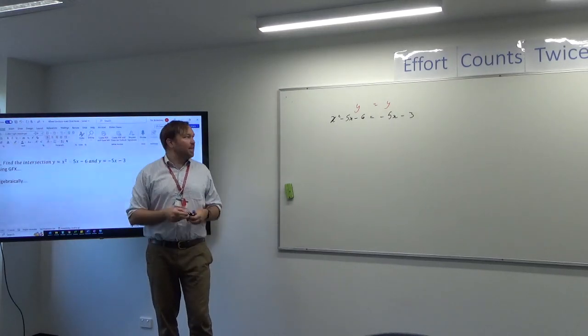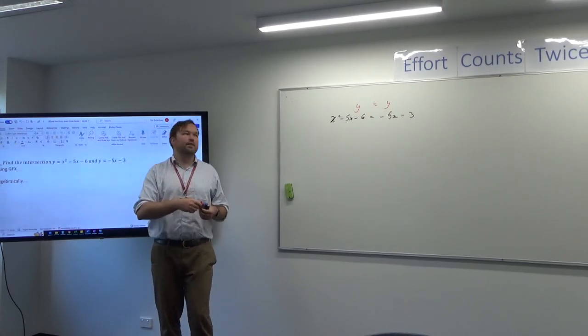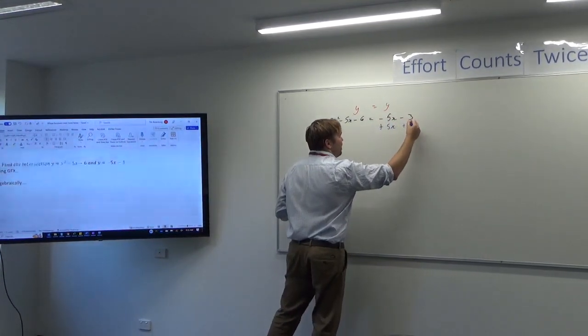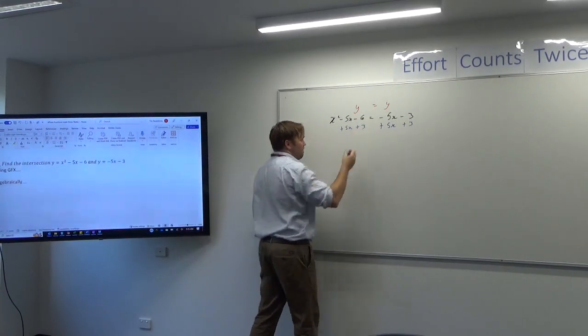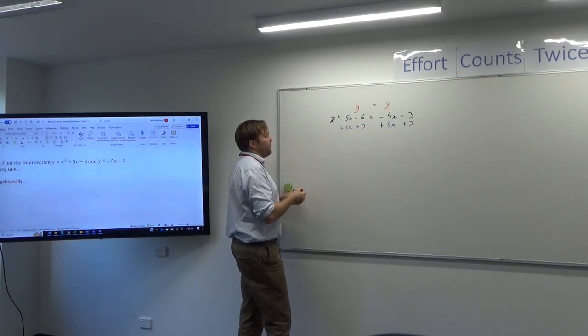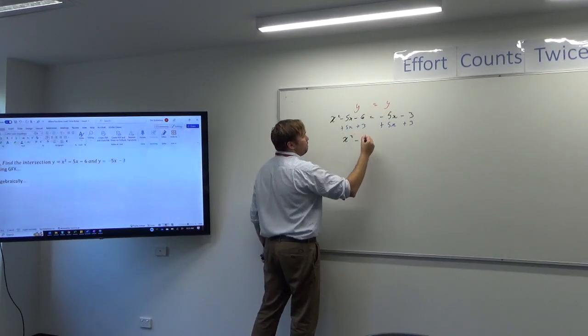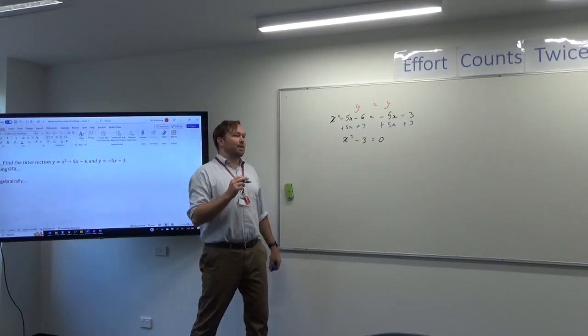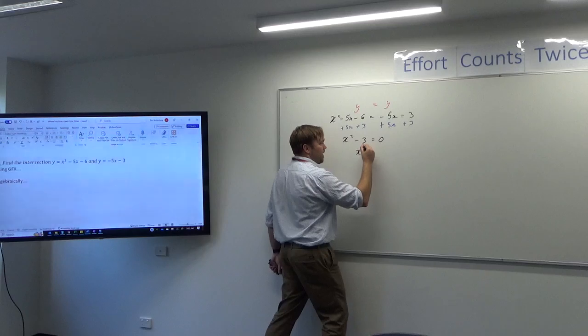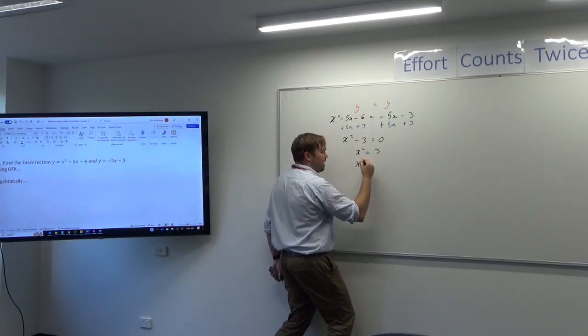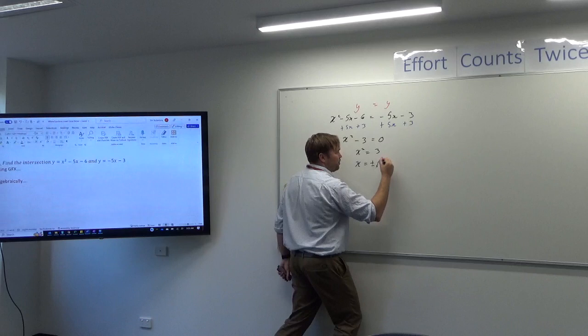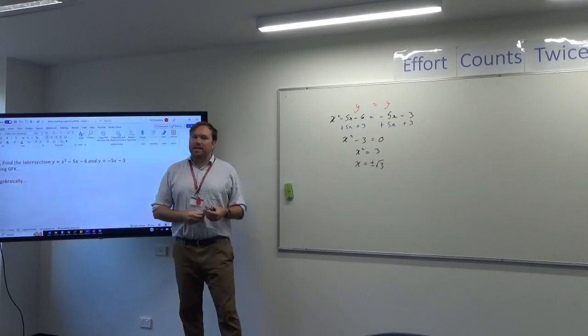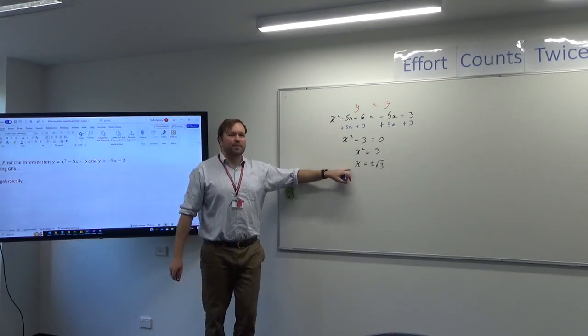Therefore, where they meet, x squared take 5x take 6 will equal minus 5x minus 3. And that's the first line that you're working algebraically, is you're setting these lines equal to each other. From here, we solve it like an equal to zero equation. So our goal is to get everything on one side and zero on the other. So I would start by adding 5x and adding 3. And what we've got then is x squared minus 3 equals zero. Now, we add 3 to both sides, so x squared equals 3. Square root both sides, x equals plus or minus root 3.